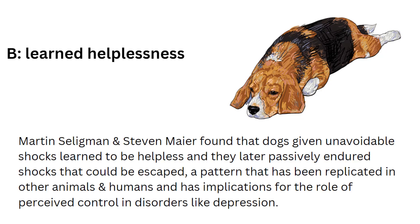Martin Seligman and Stephen Maier found that dogs given unavoidable shocks learned to be helpless, and they later passively endured shocks that could be escaped — a pattern that has been replicated in other animals and humans, and has implications for the role of perceived control in disorders like depression.